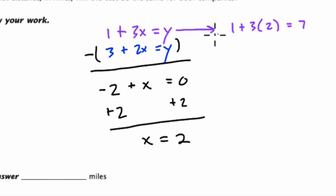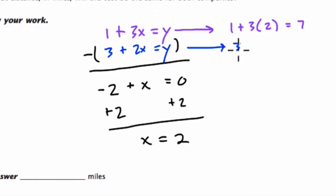And for Madeline's, we've got 3 plus 2 times 2, and that's 3 plus 4, which is also 7. So at 2 miles, they both cost $7. So there's just 2 right there.